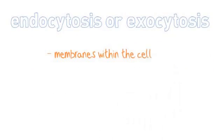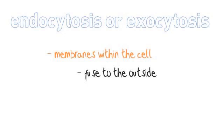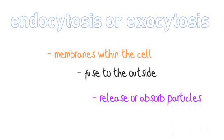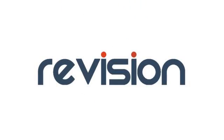And the last one we have is endocytosis or exocytosis. This is where you have certain membranes within the cell that would fuse to the outside, either to release or to absorb particles, or things that they need, or things to get rid of. That was a detailed look into cells, and now we're going to move on to disease and the immune system.